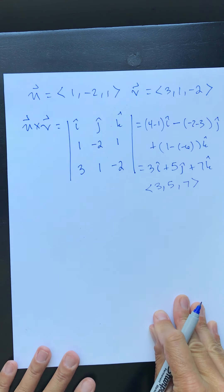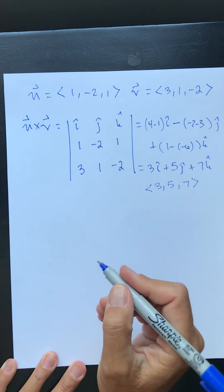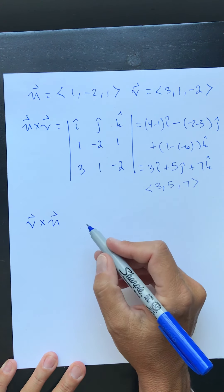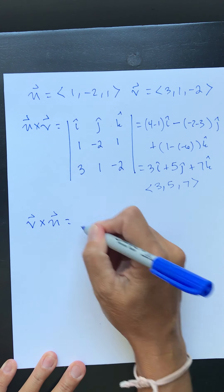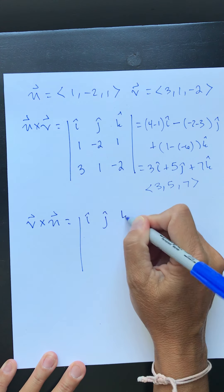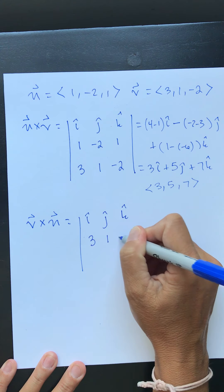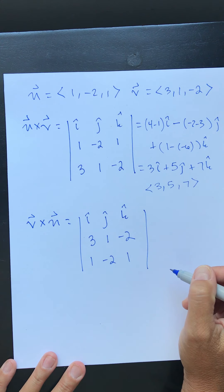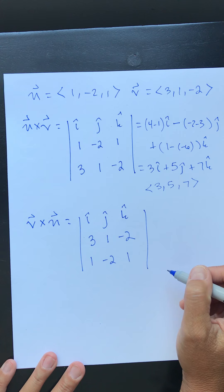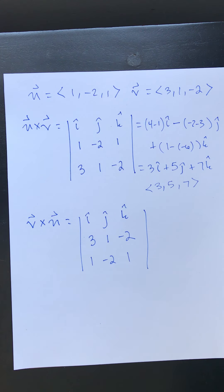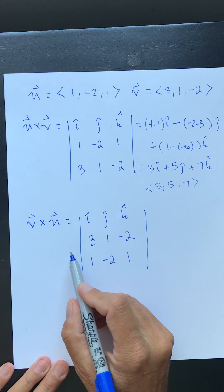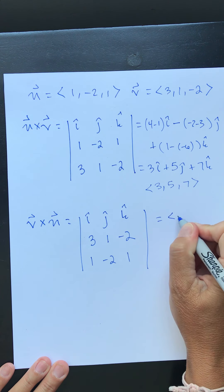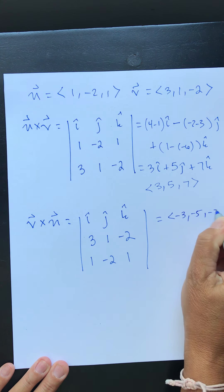So now I want you all to find v cross u. Again I told you that order matters. So it's going to be i hat, j hat, k hat, 3, 1, -2, 1, -2, 1, and I'll give you a minute to find that on your own. So hopefully we all found that v cross u is the opposite of u cross v. So v cross u comes out to be -3, -5, -7. So v cross u and u cross v are collinear, they are parallel and they point exactly in opposite directions.